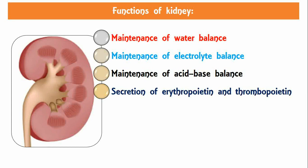Secretion of erythropoietin and thrombopoietin: kidneys stimulate the production of erythrocytes by secreting erythropoietin, which is the important stimulating factor for erythropoiesis. The kidney also secretes thrombopoietin, which stimulates the production of thrombocytes. Hormones secreted by kidneys include erythropoietin, thrombopoietin, renin, 1,25-dihydroxycholecalciferol (also known as calcitriol), and prostaglandins.